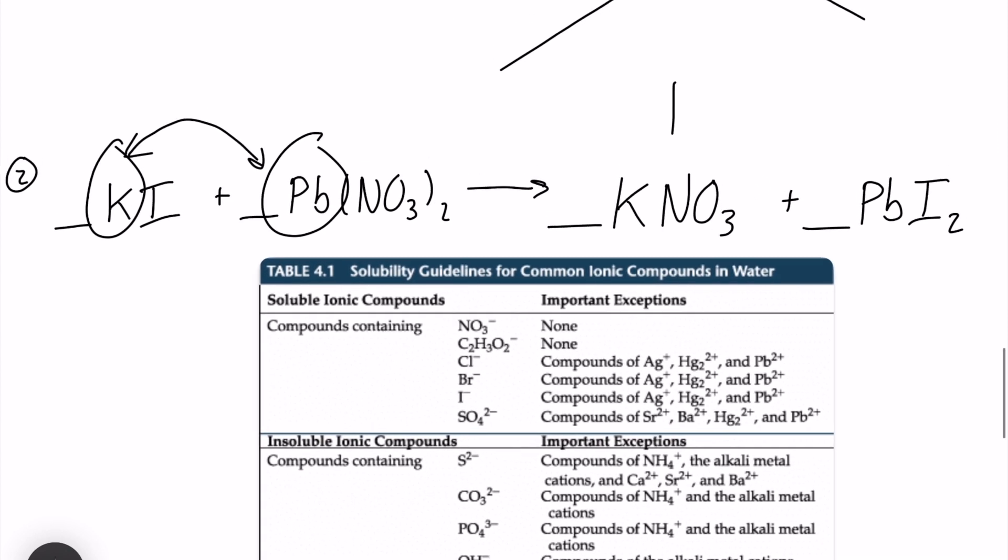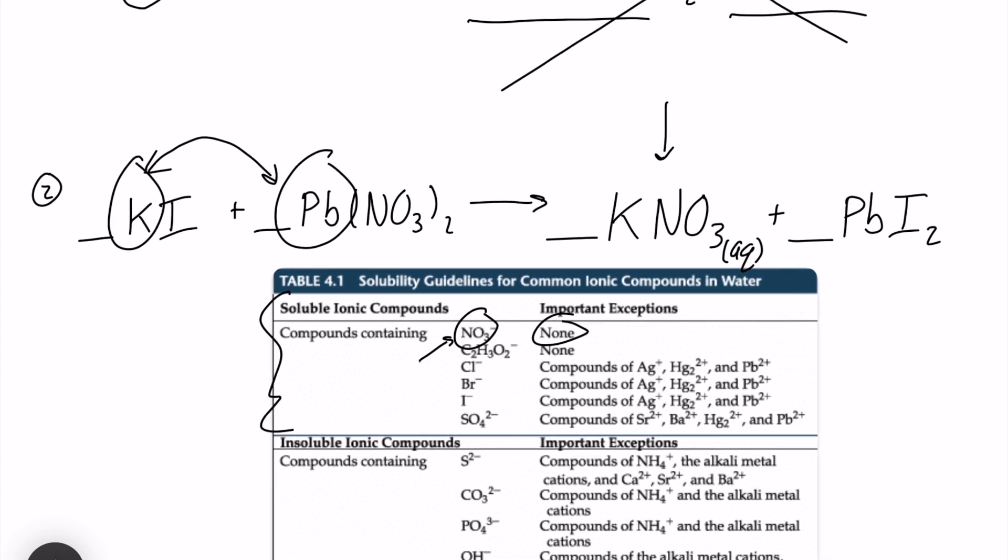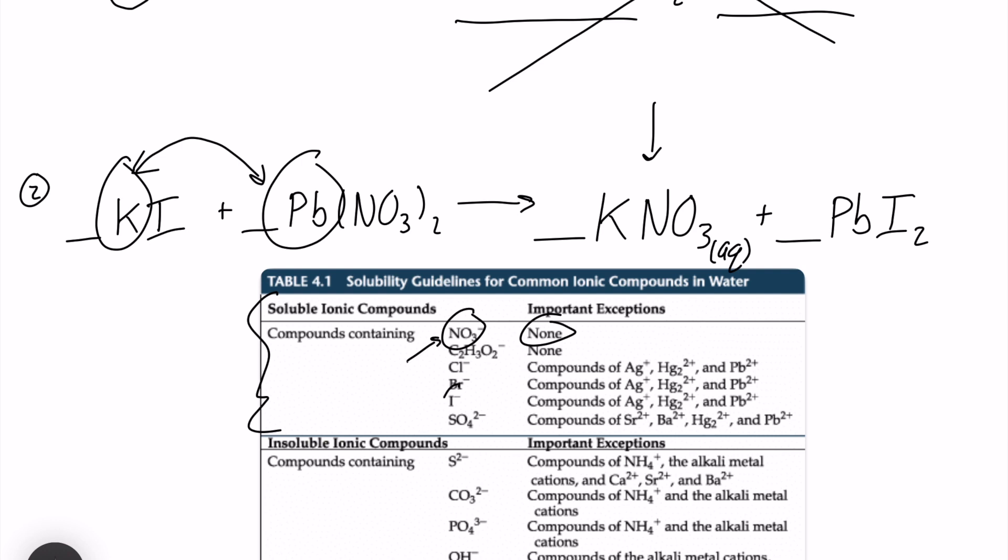So first, I'll start with potassium nitrate. So again, nitrate's at the very top here. And it's in that soluble section, soluble ionic section. And there are no exceptions at all, which means this is going to be aqueous. And if we look at, let's take a look at iodide here. We have the I-ion. It is also in the soluble ionic compound section.